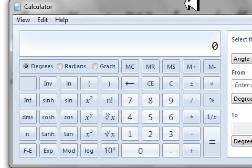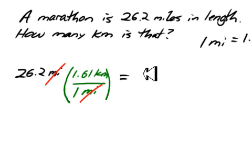So we get out the calculator, and we say 26.2 times 1.61 gives us 42.2. So 42.2 kilometers is how long a marathon is.